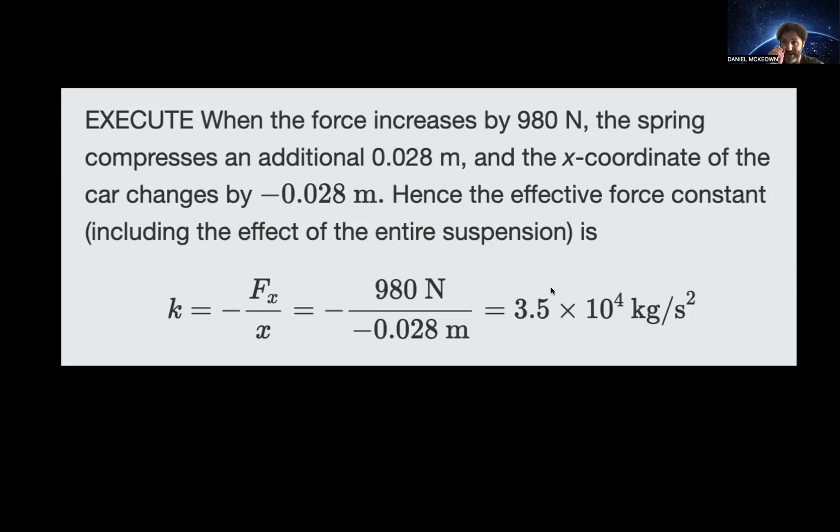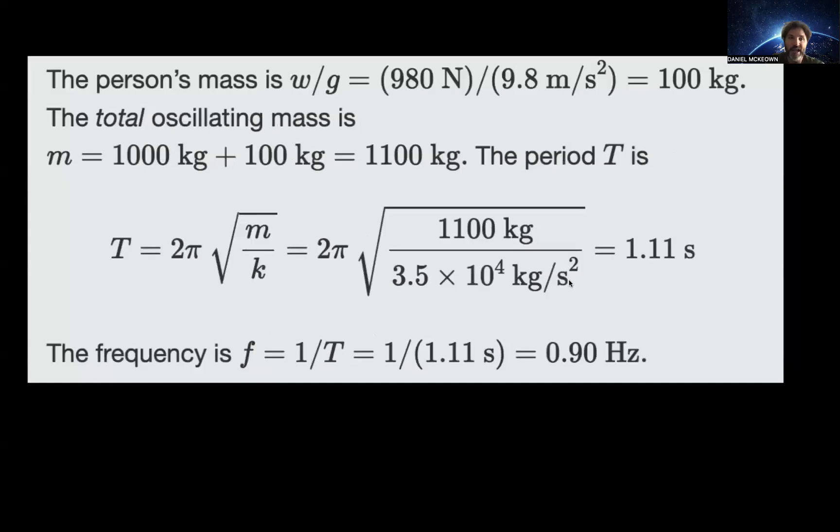So it's how many Newtons of force per meter of displacement. The person's mass is the weight divided by gravity. So it's 980 Newtons divided by 9.8 meters per second squared. So the person's weight is 100 kilograms. The total oscillating mass then is 1,000 kilograms plus the 100 kilograms of the person. So it's 1,100 kilograms. And the period of this oscillation is going to be 2 pi times square root of m over k. So the period is 1.11 seconds.